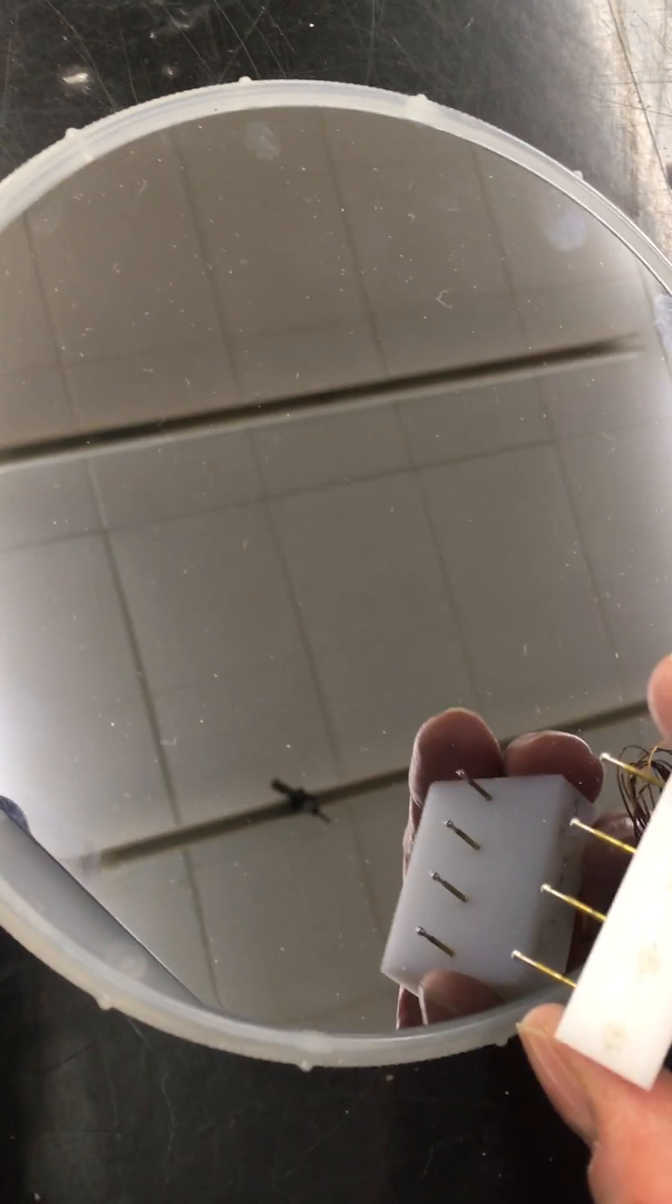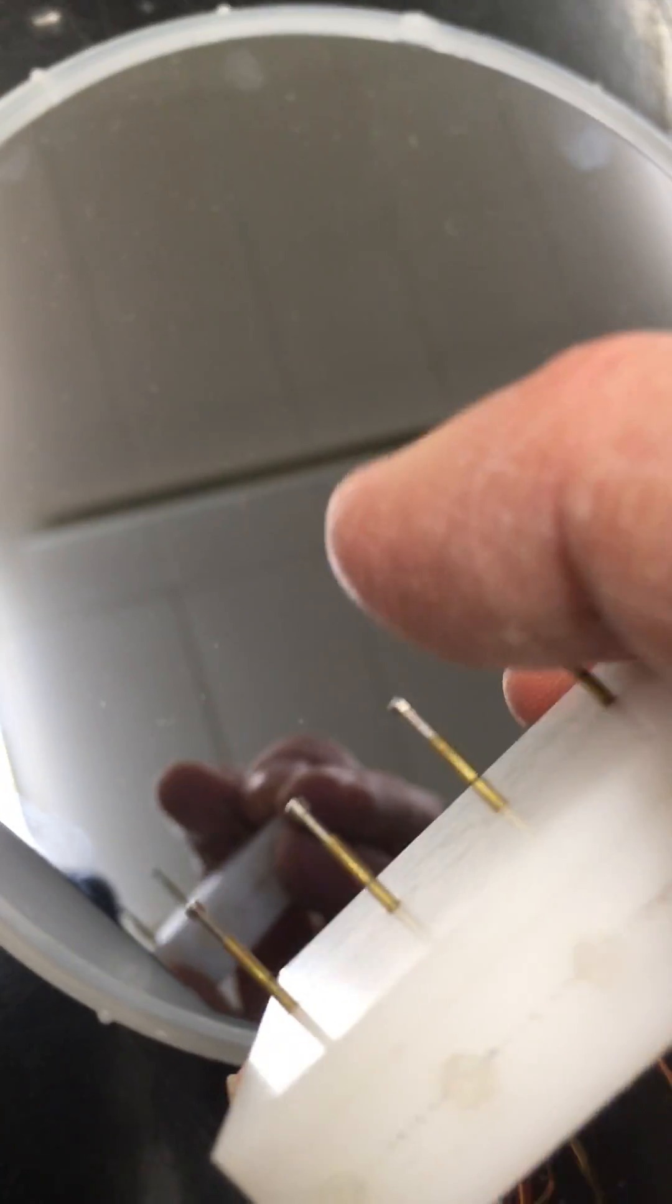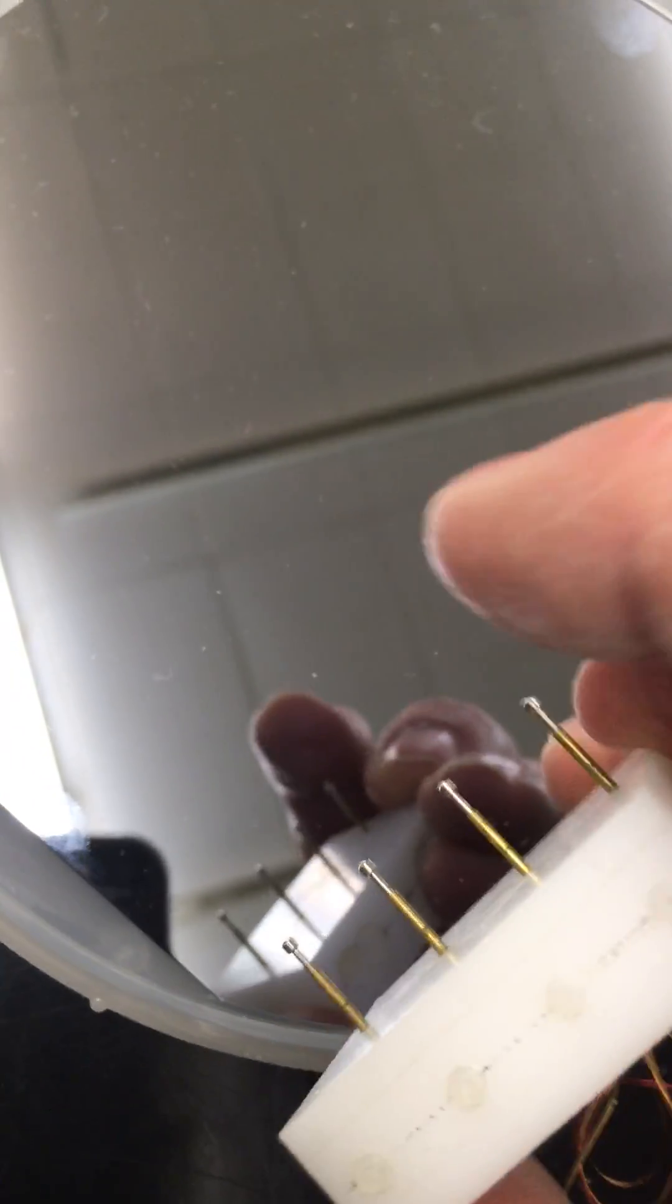So I have here what's called a four-point probe. This is a linear four-point probe because the four points are in a line. And if I put this in contact with this disk and I press down, you see that these are pogo probes that will squish when I push them down.